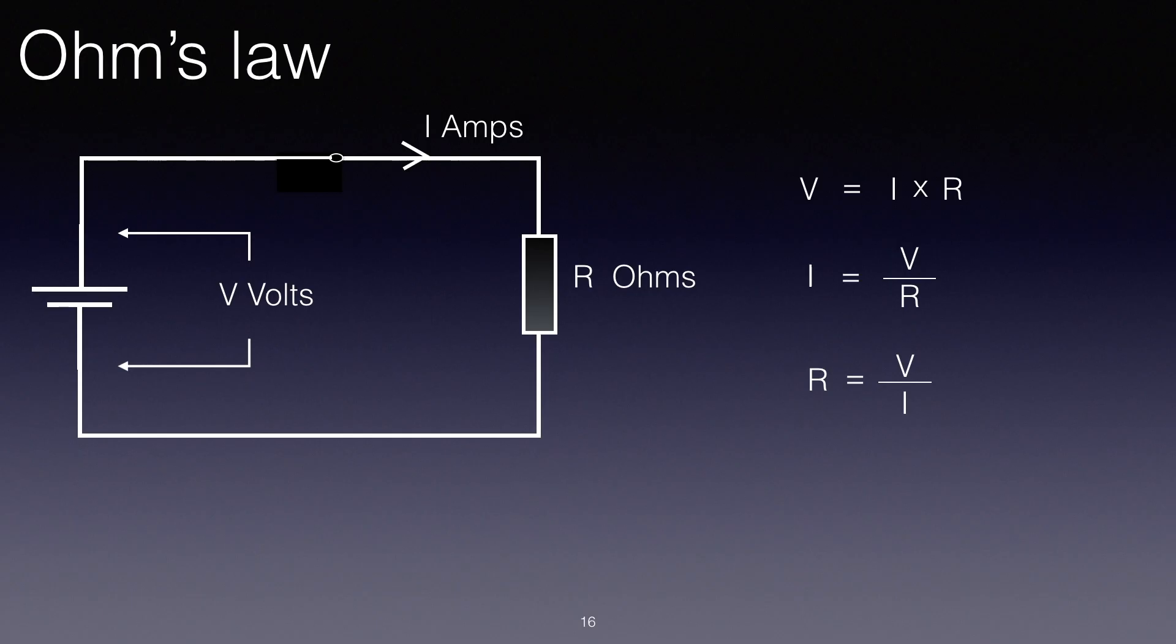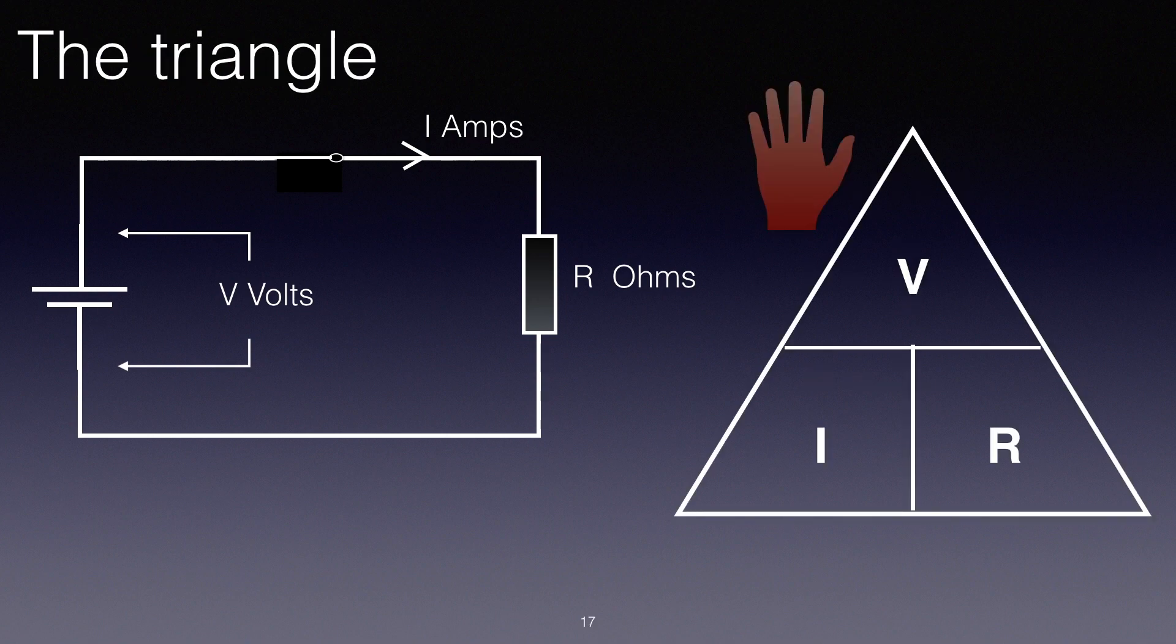Now a good way of being able to remember these three equations, or three formulae, or three arrangements of the same formula, is to use a triangle, and that's what's recommended in the RSGB book Foundation Now. If you construct a triangle like that with V on the top, I and R on the bottom, then whatever you want the subject of the formula to be, you simply cover up with your hand.